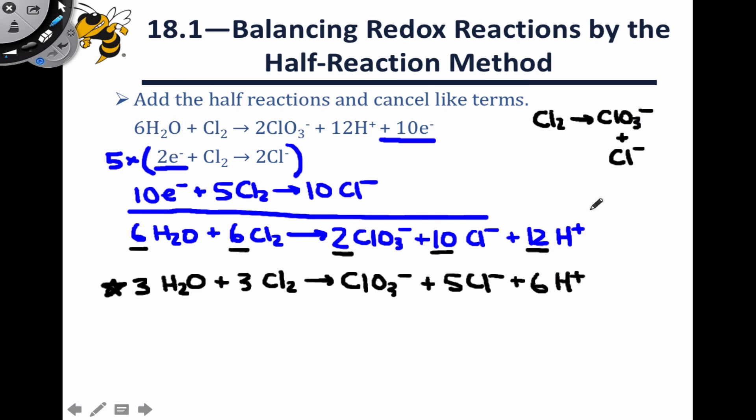We then separate this into half-reactions, and the weird thing about disproportionations is that because oxidation and reduction are occurring in the same species, the half-reactions both involve the same reactant in oxidation and reduction. Here it was Cl2.